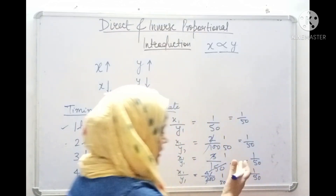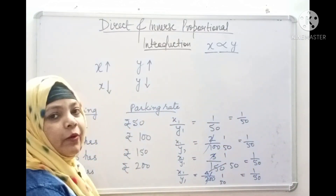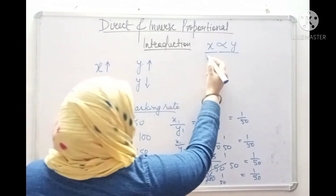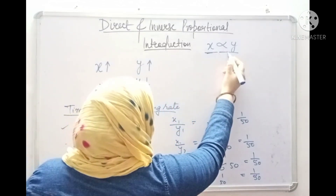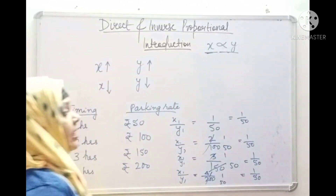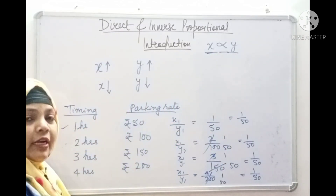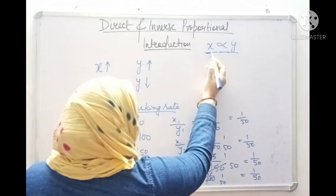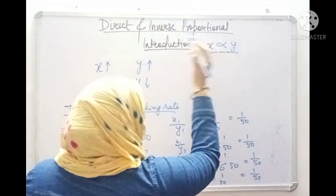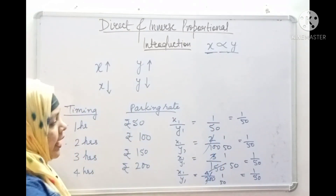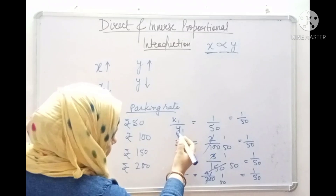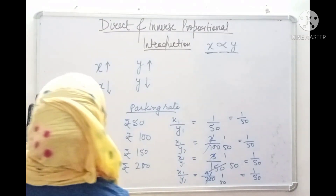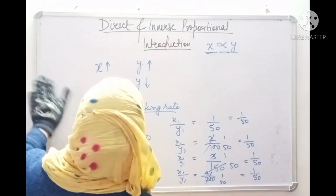So we can see here: if x is increasing then y is also increasing, and if x is decreasing then y is also decreasing. That's why we say x is directly proportional to y. It is represented in the form of x1 by y1 equals x2 by y2.